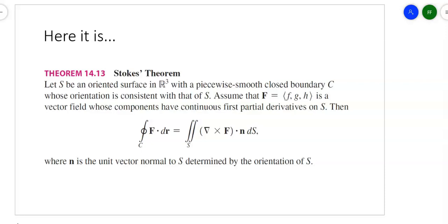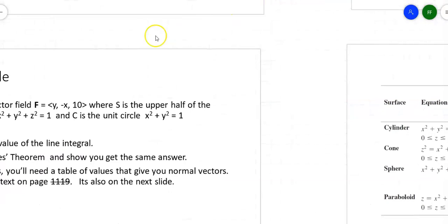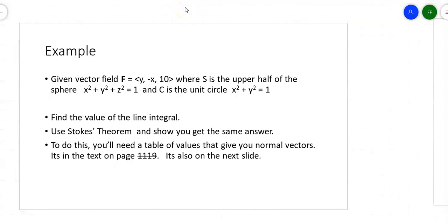Let's take an example and do it both ways to see that we get the same answer. Here is my vector field: Y, negative X, and 10. The surface that I'm looking at is the upper half of a sphere, and C is the unit circle with a radius of 1. I'm going to use Stokes' Theorem with a line integral and see if I get the same thing.